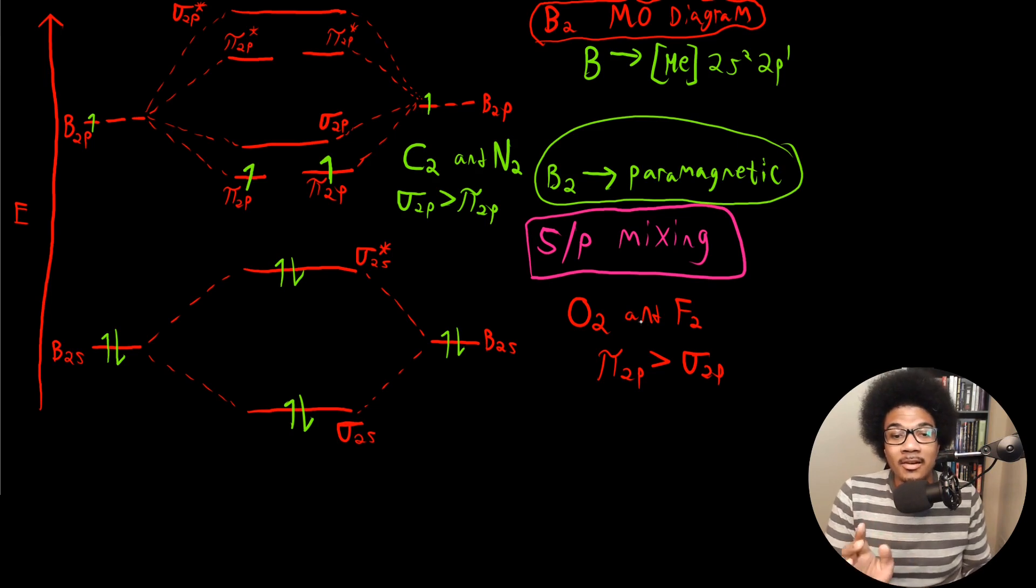Now, does that mean that no SP mixing is occurring in O2 and F2? No, there is SP mixing, but it's not significant enough to change this ordering of the orbitals. So even though there is SP mixing in all cases, in O2 and F2, it's not significant enough to change the energy ordering like it is in B2, C2, and N2.